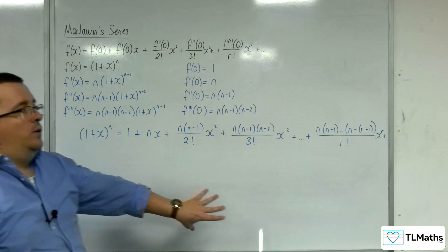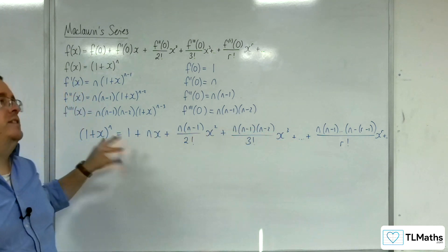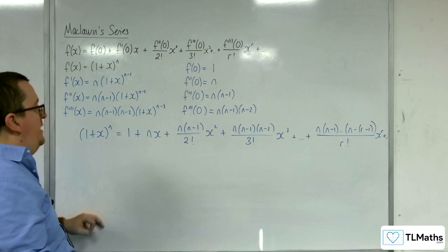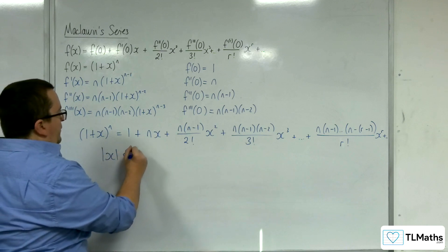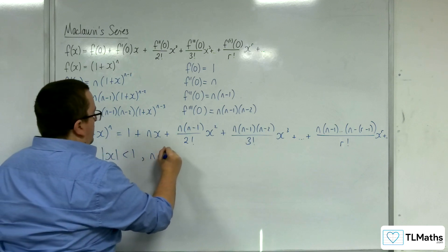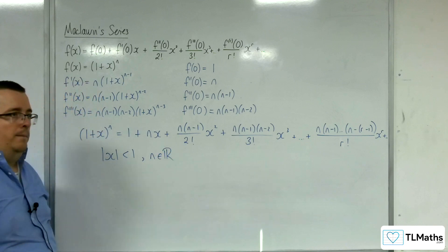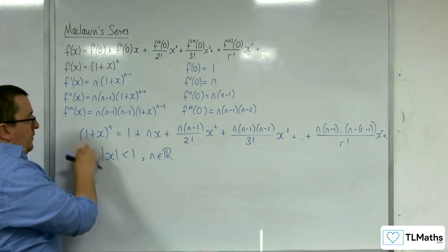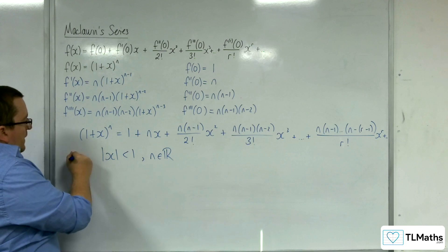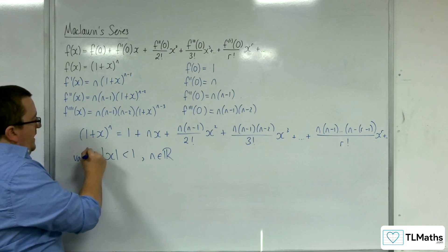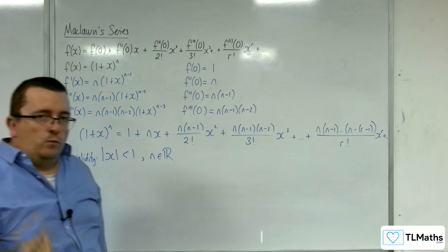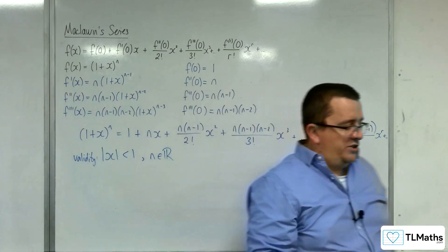Now, we know also that this has a range of validity. We know that this is only true for mod x is less than 1, where n here is a real number. So this is the validity, and this is something that we need to consider when we're working with Maclaurin series.